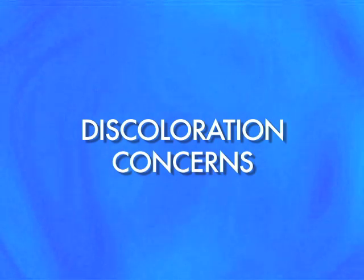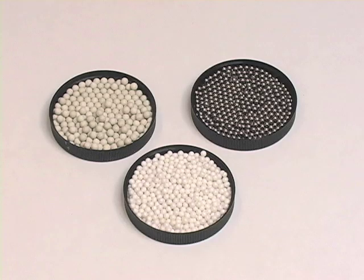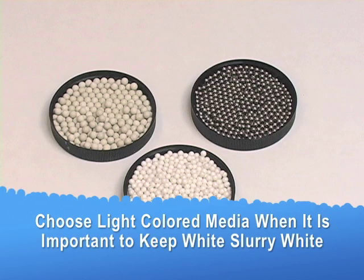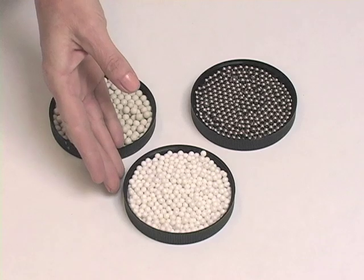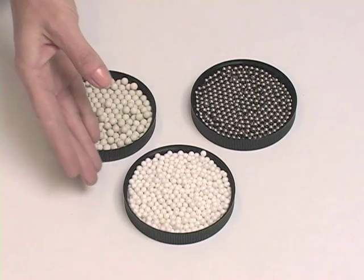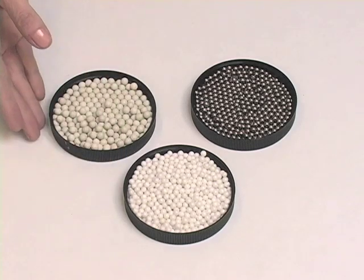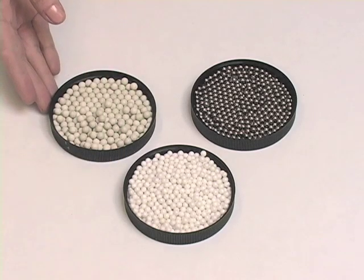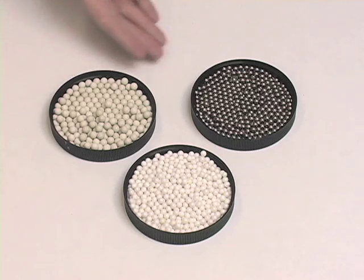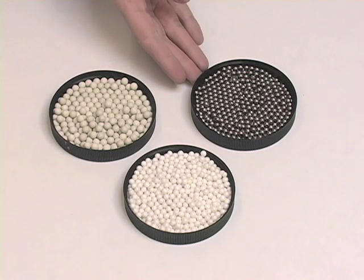Sometimes it's very important to keep white slurry white and not have it discolored due to the properties of the grinding media. In this case, you'd want to use a light colored media such as zirconium oxide YTZP or a steatite media. You wouldn't choose a dark colored steel media for this purpose.